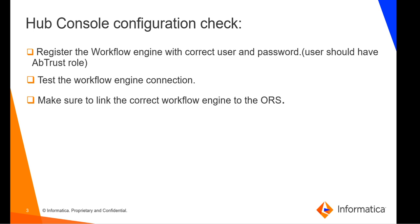First, let's discuss about the hub console configuration. The first thing: in the hub console under Workflow Manager, we need to make sure that you have registered the ActiveOS engine with the correct username and password. Also, the user should have the AB trust role in the app server. The second point: the workflow engine connection should be successful. And the third point: we need to link the correct workflow engine to the ORS. I'll just show you the demo.